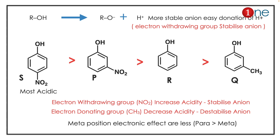Then comes P, because nitro is present but in the meta position. R comes next, and Q is the least acidic because of the electron-donating methyl group. So the acidity order is S > P > R > Q. The key concept here is that anion stability dictates the acidity of the compounds.